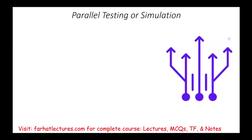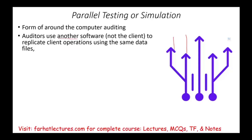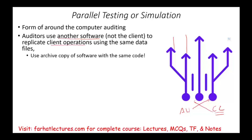Then there is parallel simulation or parallel testing. Here, the auditor uses another software — not the client's — to replicate the client's operations using the same data files. Think of two parallel lines that don't meet: the client system and the auditor system run separately. You may use an archive copy of the software, develop your own software, or use a generally accepted audit software package that helps generate sum totals and hash totals to determine if the sums are correct.